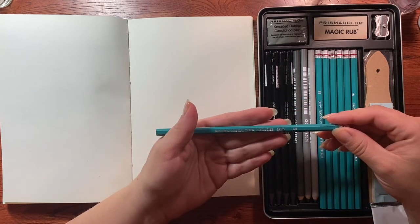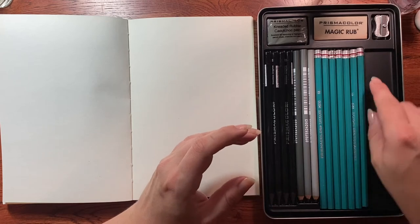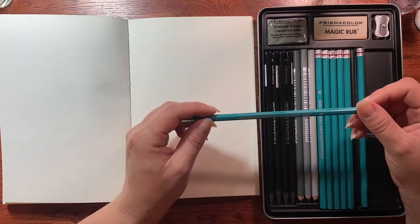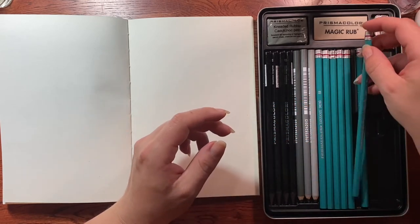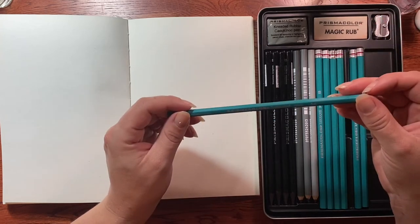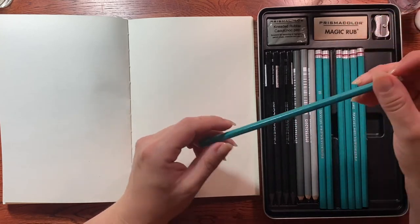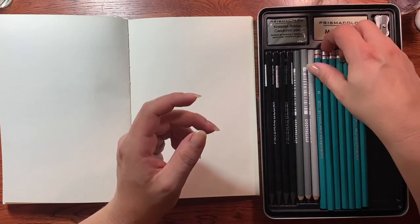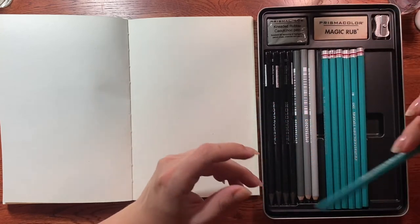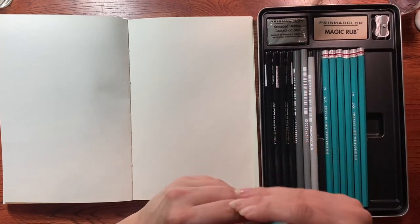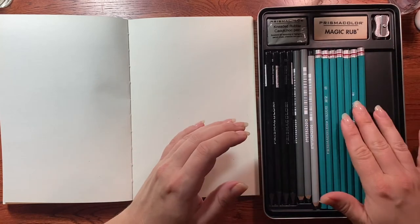Okay. So these turquoise graphite pencils. So you have a 6H and I don't know exactly what the letters mean. Well, I know that they mean sharpness and softness. This one is a 4H and this one is a 2H, a B, a 2B, a 6B, and an 8B. And as far as I know, I think these are just basic drawing pencils. They're not actually colored turquoise.